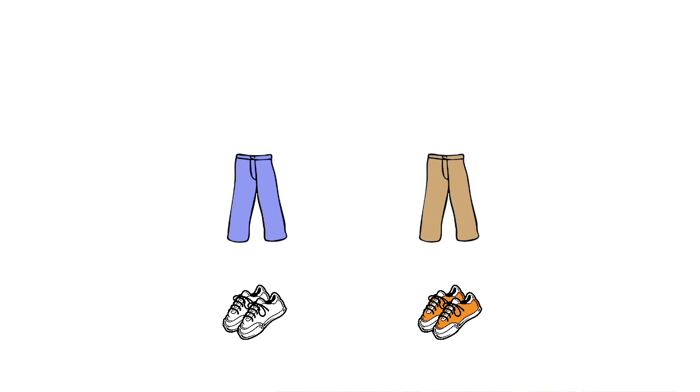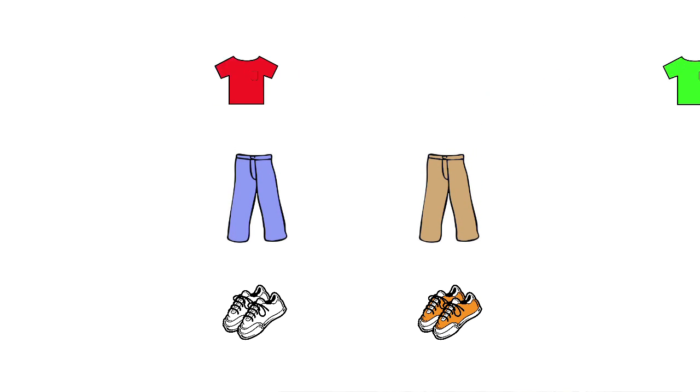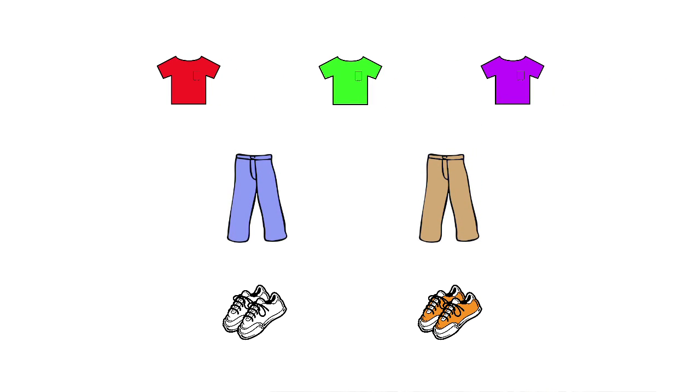Let's look at this problem. Will you read it, Alexis? I'd love to. For school, Sam has two pairs of tennis shoes, white and orange. He has two pants, blue and tan. He has three shirts, red, green, and purple. How many outfits can he wear with the clothes listed? He must wear one matching pair of shoes, one pair of pants, and one shirt.